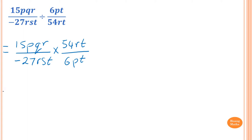There is only one negative, so the result is negative. For the numerals: 15 and 6 divide by 3, giving 5 and 2. Then 54 and 27 divide by 9, giving 6 and 3. Then 3 times 2 is 6, and those sixes cancel out.